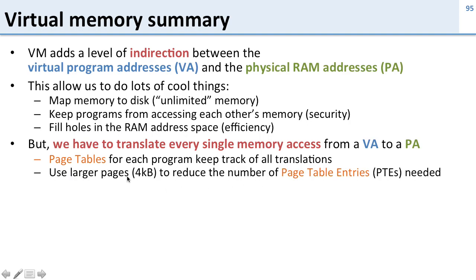In order to solve that problem, we use larger pages. Today we use four kilobyte pages, and people are moving to even larger pages. This allows us to reduce the number of page table entries. With four kilobyte pages on a 32-bit machine, we only need a million page table entries.